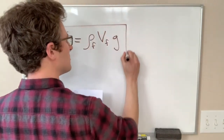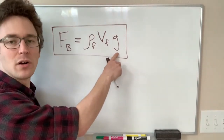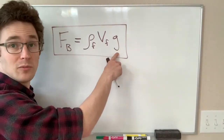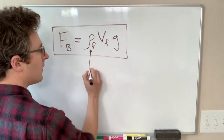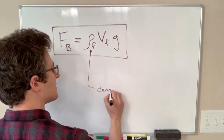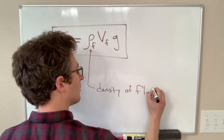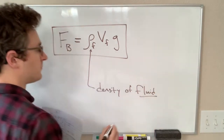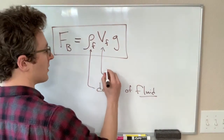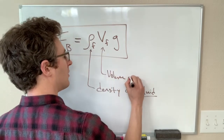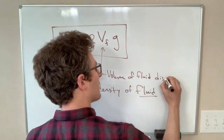Let's define all of these right now. G we know is our gravitational acceleration, 9.8 meters per second squared. Rho F here is the density of the fluid. And V_F is the volume of fluid displaced by the object.